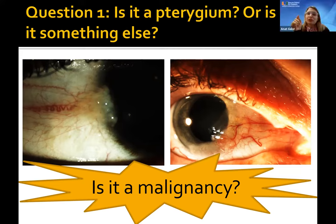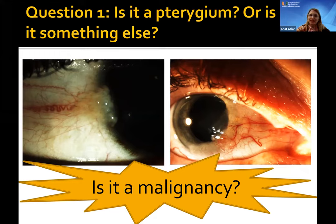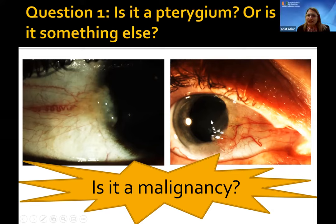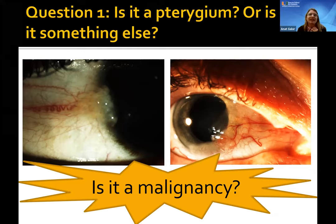Feeder vessels are helpful for melanoma, but for OSSN you often don't have feeder vessels — instead you look for abnormal vessels: hairpin loop vessels appearing as dots because they go up and back down, vessels that branch five times, or corkscrew vessels. Also look at location — involvement at six o'clock is unusual. Look for opacity where vessels don't extend all the way, and features like gelatinous appearance or leukoplakia. These should trigger concern.